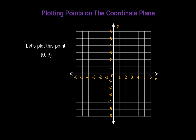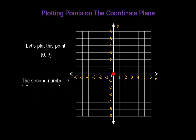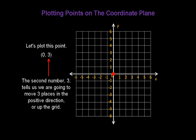Let's plot the point (0, 3). Again, we always start at the origin, (0, 0). The first number, 0, tells us we're not going to make any left or right movement, so we don't move at all. The second number, 3, tells us we're going to move 3 places in the positive direction, or up the grid. And there's our point, (0, 3).